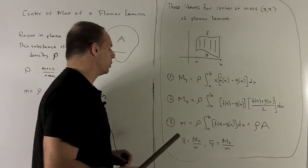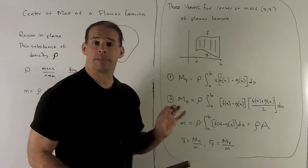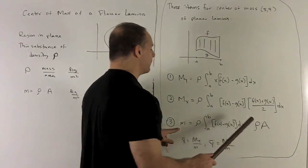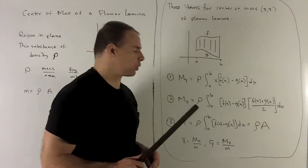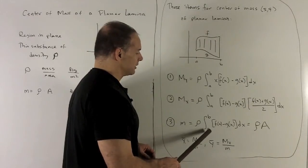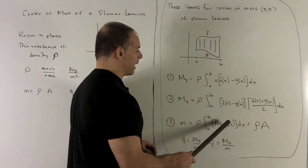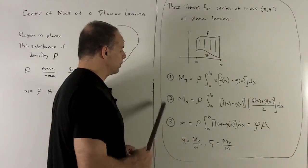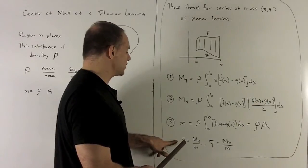For our mass function, note mass, we have uniform density here. So mass is just density times area. And the area of this region, we've already done that before. That's just take the definite integral from a to b of f minus g.